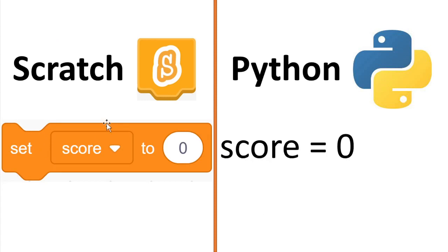We've got a variable, and in Scratch we just use the 'set' block to assign a value to a variable. In Python all we do is type 'variable equals whatever'. We do have to define the variable first in Python. So if you create a variable in Scratch, which you would do by just clicking 'create new variable', in Python you just need to type 'your_variable equals whatever' to start off with, and then you can set it to whatever you want in the program.